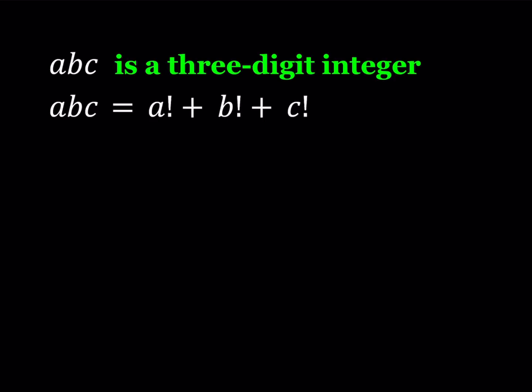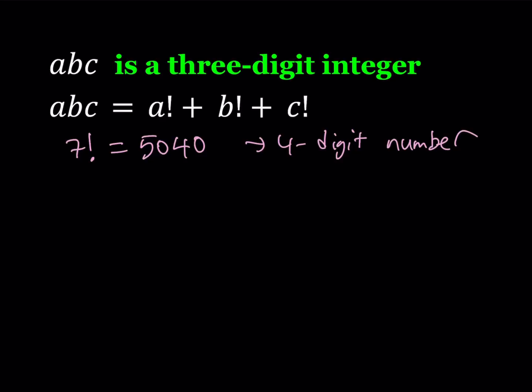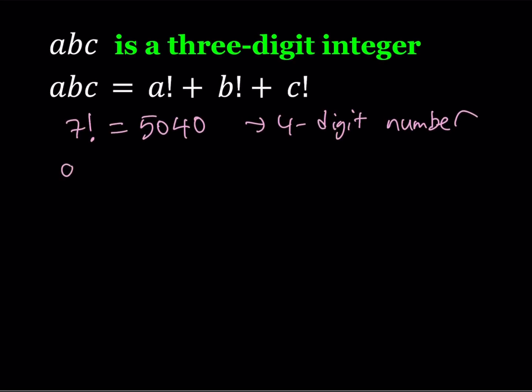Let's go ahead and try to solve this problem. When you think about factorials, obviously 9 factorial is pretty large, and even 7 factorial is kind of large for this number, because 7 factorial is 5040 and that is a four-digit number. So that means that none of these digits can be a 7, because that's going to give us a larger number. So all these digits — A, B, C — need to be less than or equal to 6.